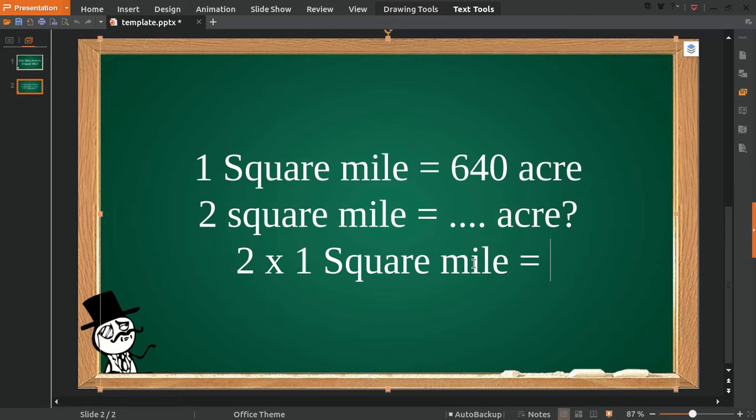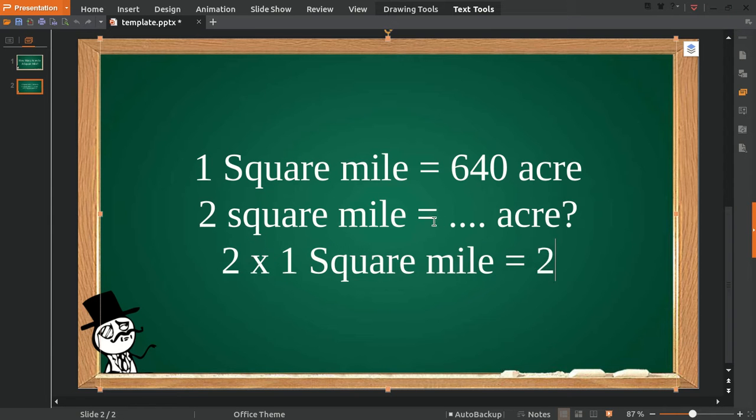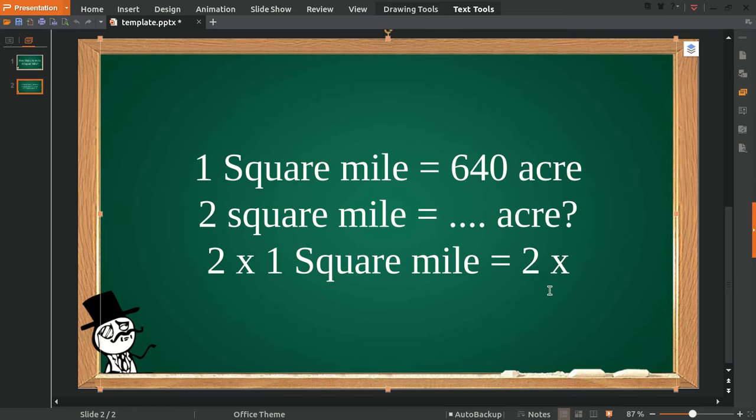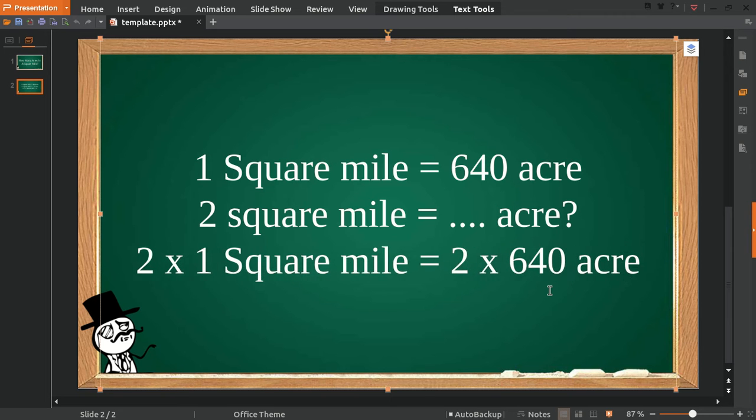All right, now because we have two on the left, we must have two on the right as well. Two square miles is equal to two multiplied with one square mile. That's right. And it's equal to two multiplied with 640 acres, so we multiply it with 640 acres.